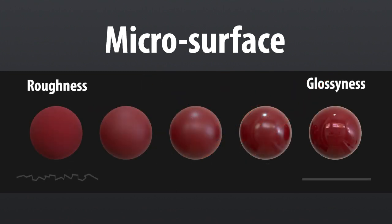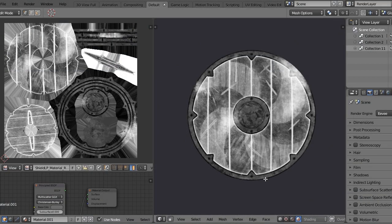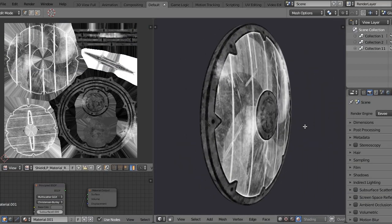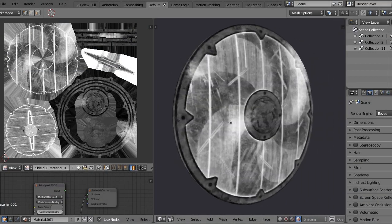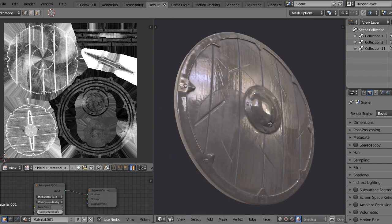This brings us to the second important concept: roughness and smoothness of the surface. The more irregular the surface, the rougher the reflections will be. The more regular, the smoother the reflections will be. In video games, this factor is controlled by a roughness map, where the black color determines smoothness and white determines roughness.